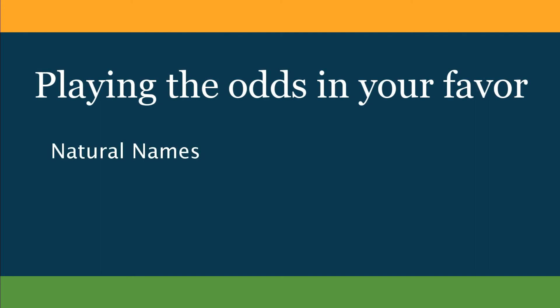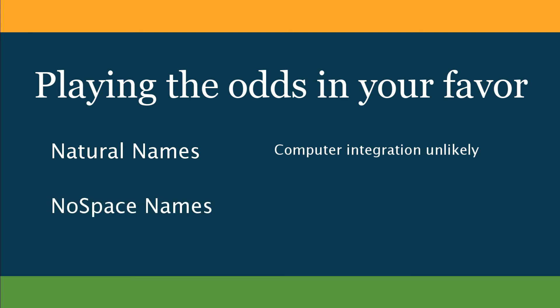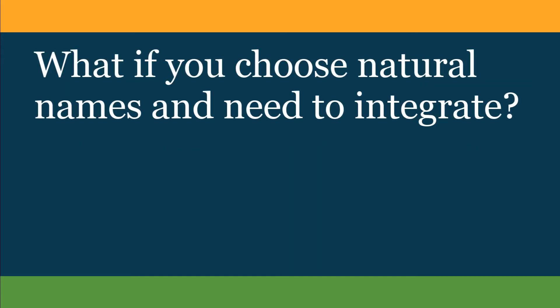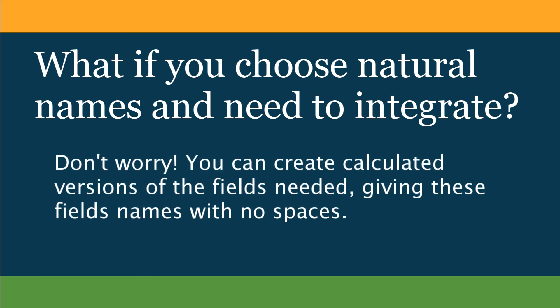In choosing a naming convention for your FileMaker database, play the odds in your favor. Natural names that include spaces are super for people and perfect for when computer integration is unlikely. No-space names are a great choice if computer integration is planned or likely down the road. If you chose natural names and need to integrate later, don't worry — you can create calculated versions of the fields needed for the integration and give these fields names with no spaces.